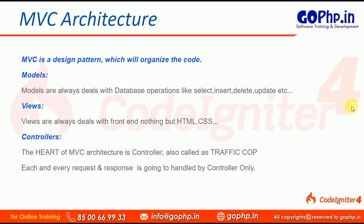In MVC, what exactly is a Model? Models always deal with database operations — we can insert data, select data, delete data, update data. A model is simply a PHP class file that contains methods and properties to work with the database. To insert data, to get data, to select data — for everything, there will be some methods inside the model.